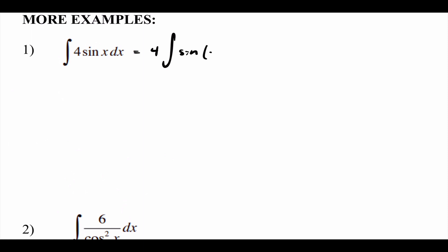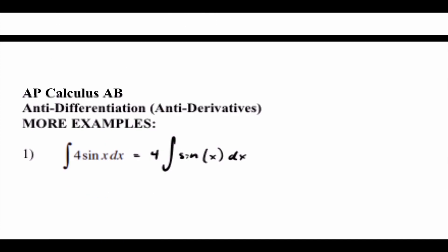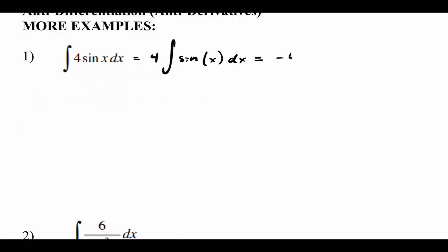So it's four times the integral of sine of x dx. The derivative of sine is cosine, so the anti-derivative of sine is negative cosine. That gives us four times negative cosine of x, plus C. Multiplying those two together we get negative four cosine of x plus C.